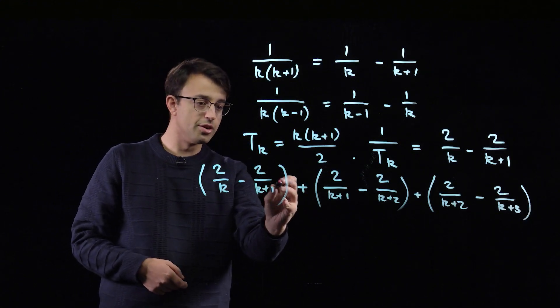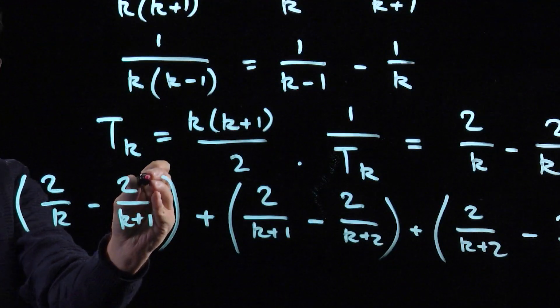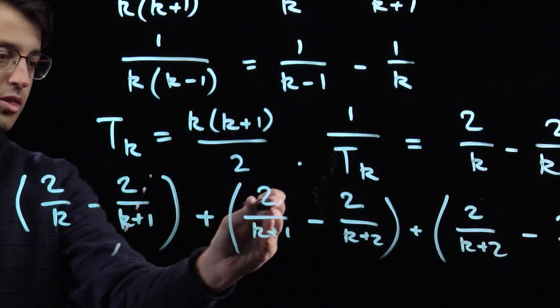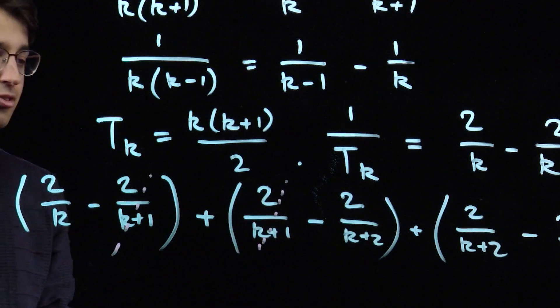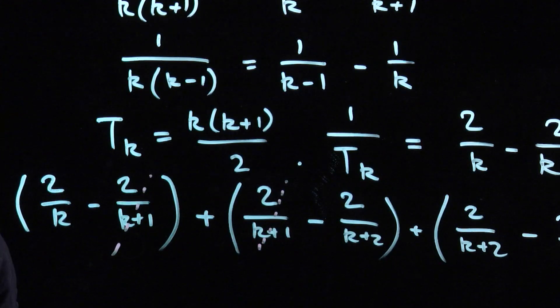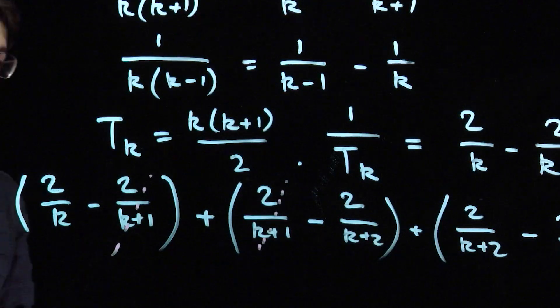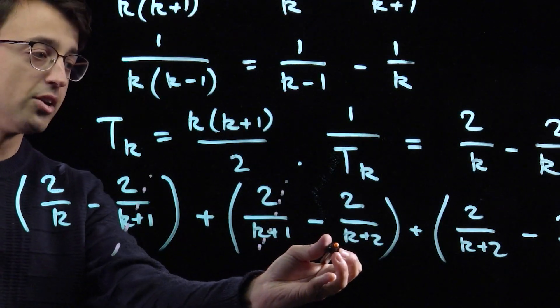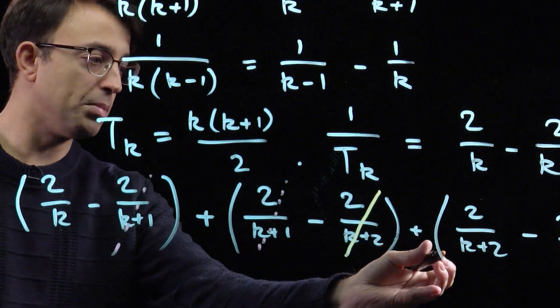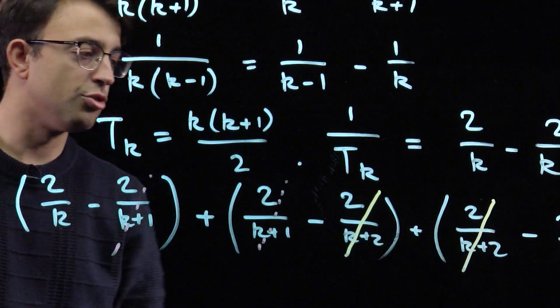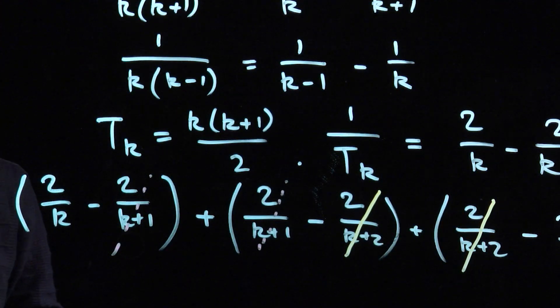We have some cancellation. We've got a minus 2 over k plus 1 here that will cancel with the plus 2 over k plus 1 in the next bracket. And we can do the same for the next term too. Here we've got minus 2 over k plus 2 that's going to cancel with plus 2 over k plus 2 in the next bracket.